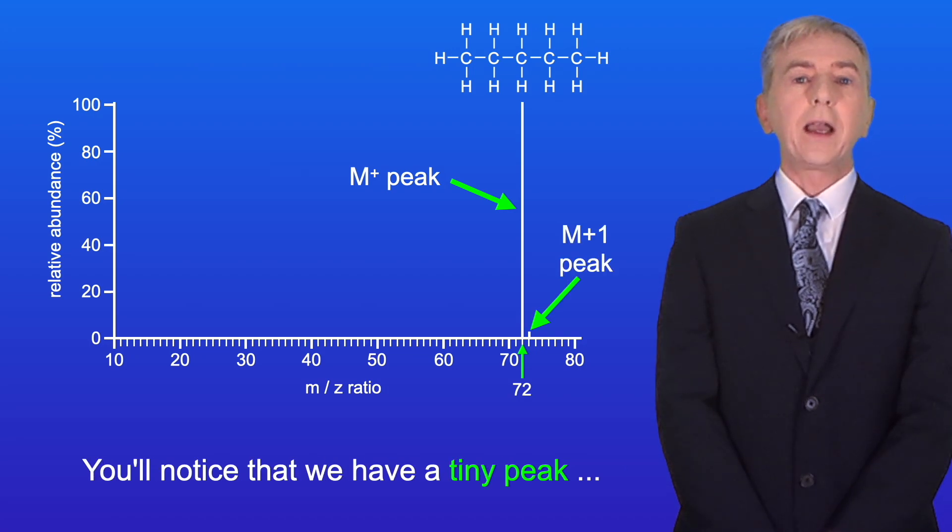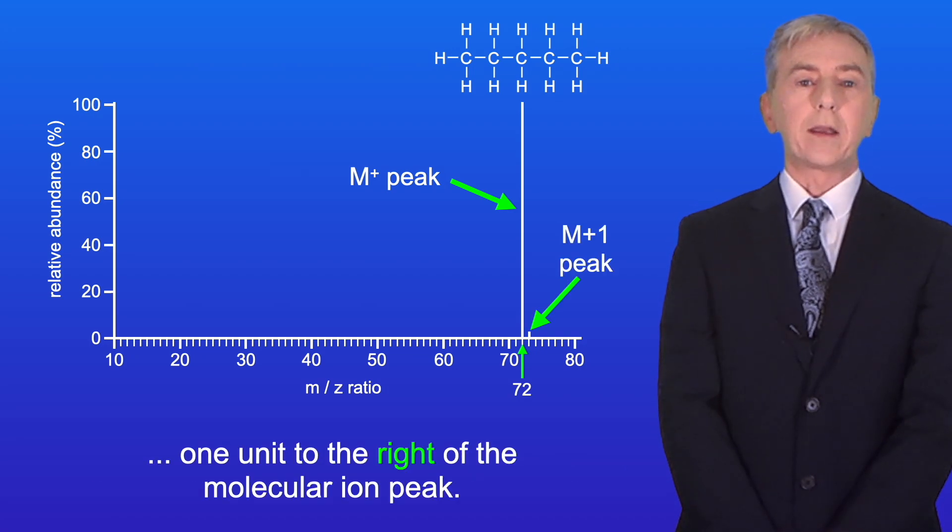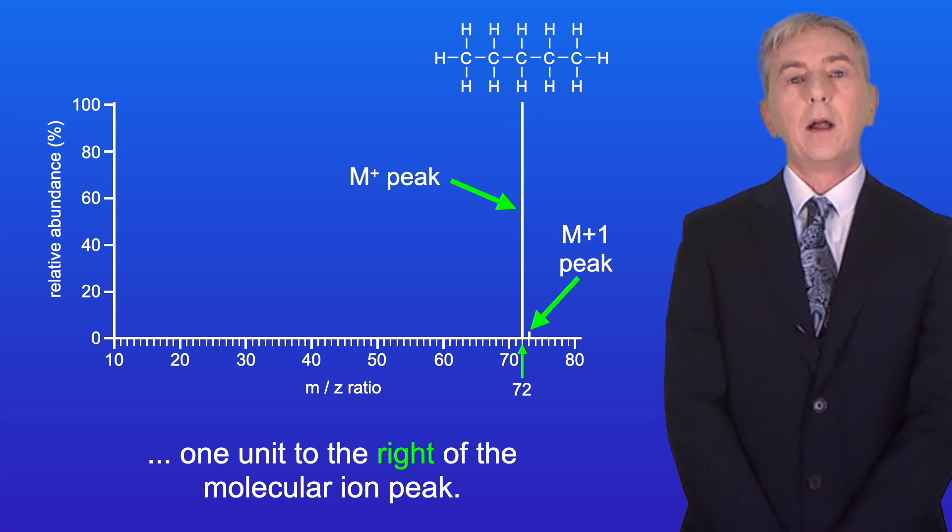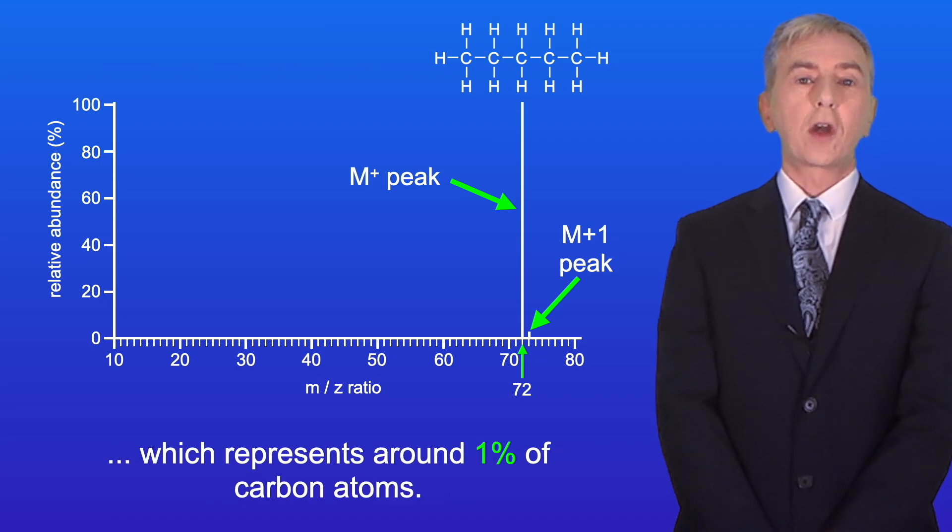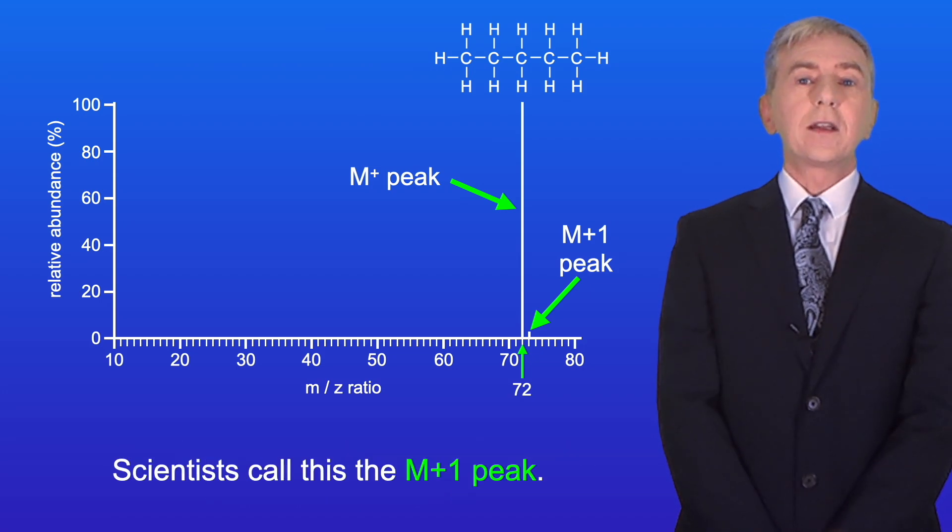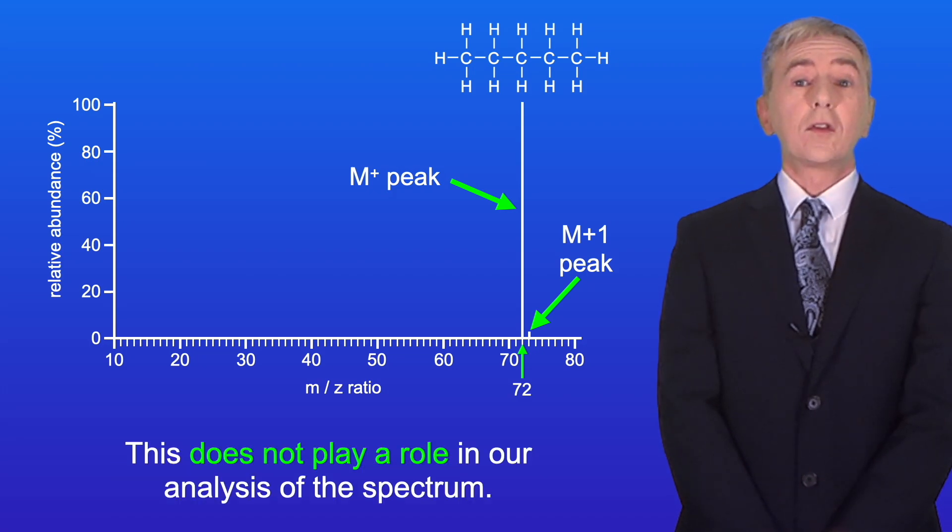Now you'll notice that we have a tiny peak one unit to the right of the molecular ion peak. This peak is due to the presence of the isotope carbon-13 which represents around 1% of carbon atoms. Scientists call this the M+1 peak and this does not play a role in our analysis of the spectrum.